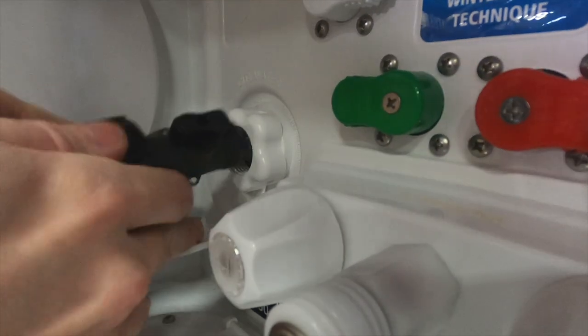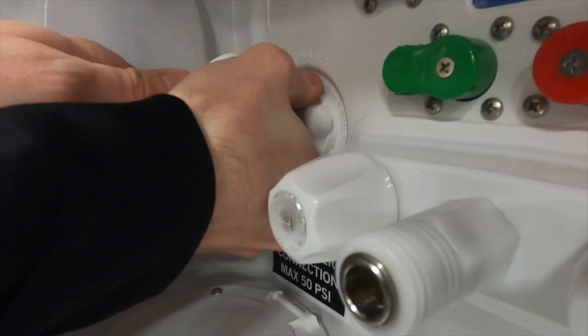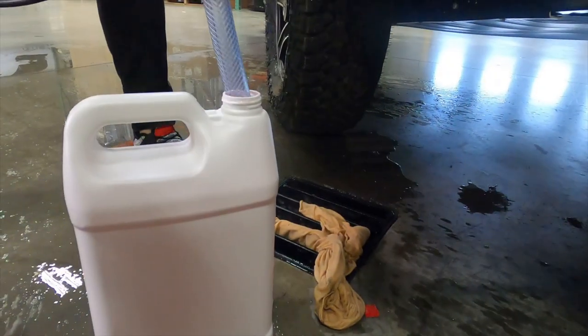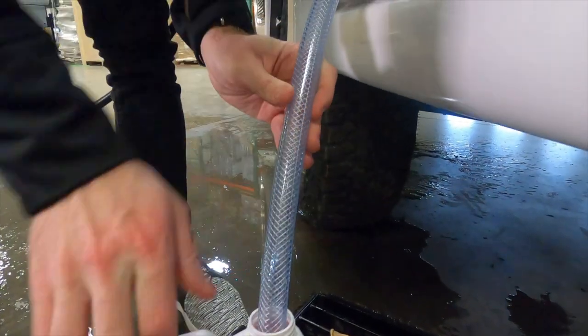Attach your garden hose to the city water inlet. Put the other end of the hose into the antifreeze jug or bucket.